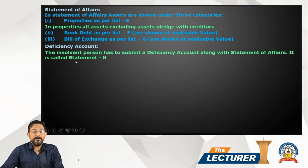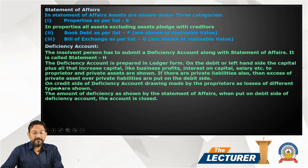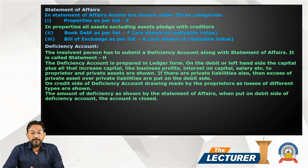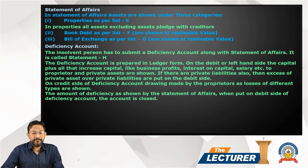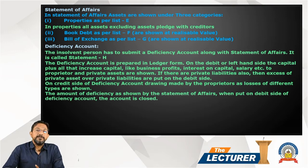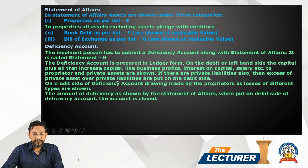The Deficiency Account: The insolvent person has to submit a deficiency account along with the statement of affairs — it is called List H. The deficiency account is prepared in ledger form. On the debit side, or left-hand side, capital plus all items that increased capital — like business profit, interest on capital, salary to the proprietor — and private assets are shown. If there are private liabilities, the excess of private assets over private liabilities is put on the debit side.